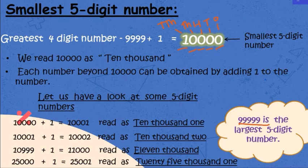If I add 1 to 24,999, I get 25,000. In this way we get more and more 5-digit numbers. The greatest 5-digit number is 99,999.